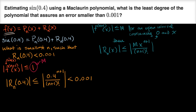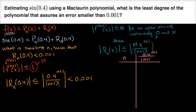Let's set up a table with n and the corresponding value of 0.4 to the (n+1) over (n+1) factorial. When n equals one, this is 0.4 squared over 2 factorial: that's 0.16 over 2, which equals 0.08. That's definitely not less than 0.001.